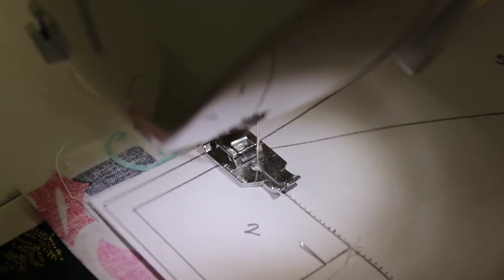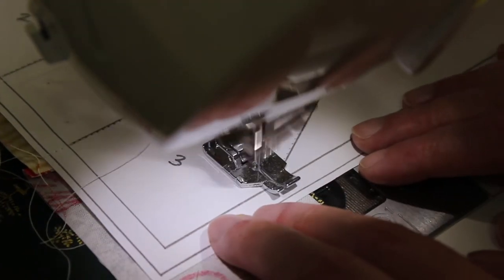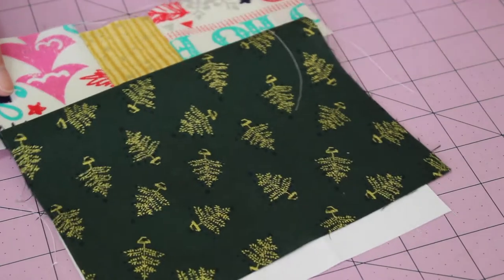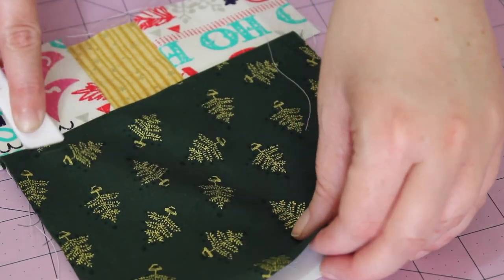Begin sewing from the start of the line to section four and finish just where it ends. Then turn the pattern over again and firmly press open the line you've just sewn.